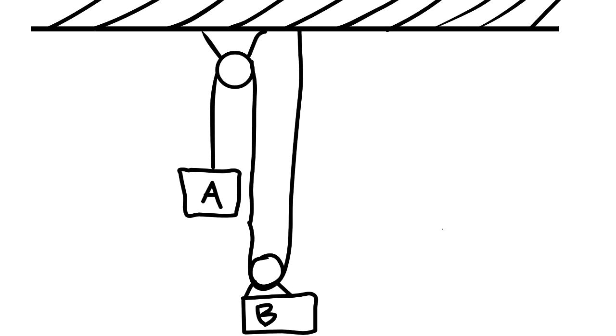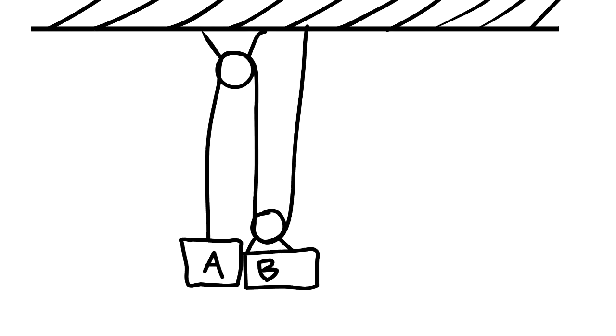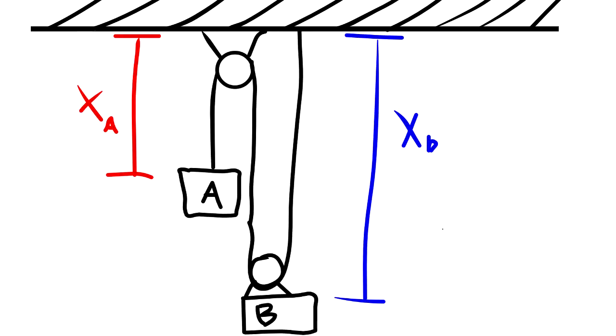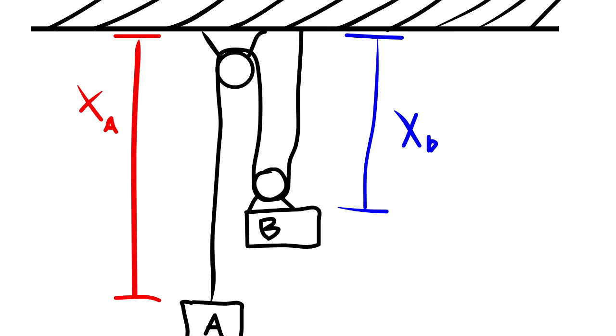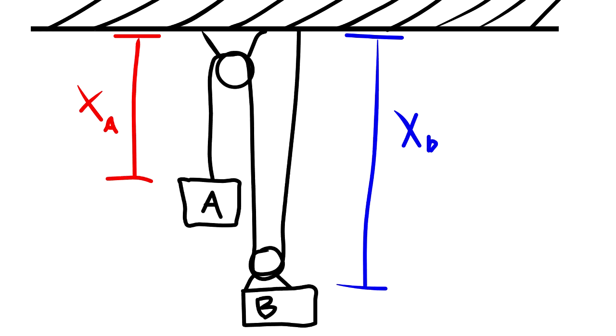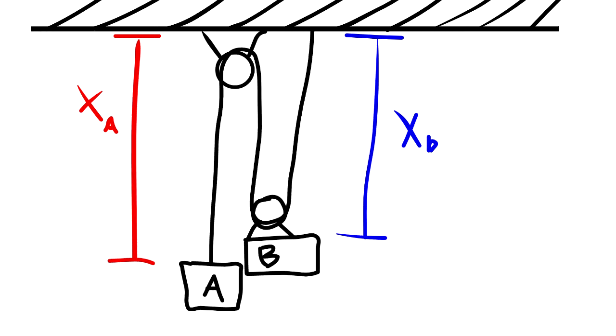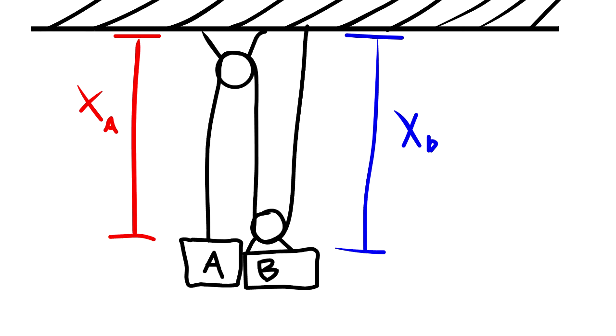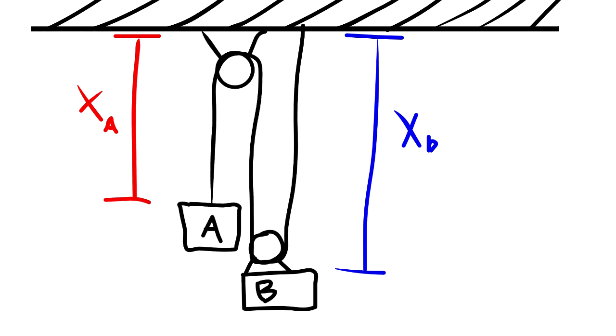Imagine we had a simple pulley system like the one shown. Let's mark the position of each block A and B relative to the top of the frame as X sub A and X sub B. Let's now try to find a relationship between the positions of A and B and the total length of the cable. If we wanted to express the total length of the cable in terms of X sub A and X sub B, we could write the following.